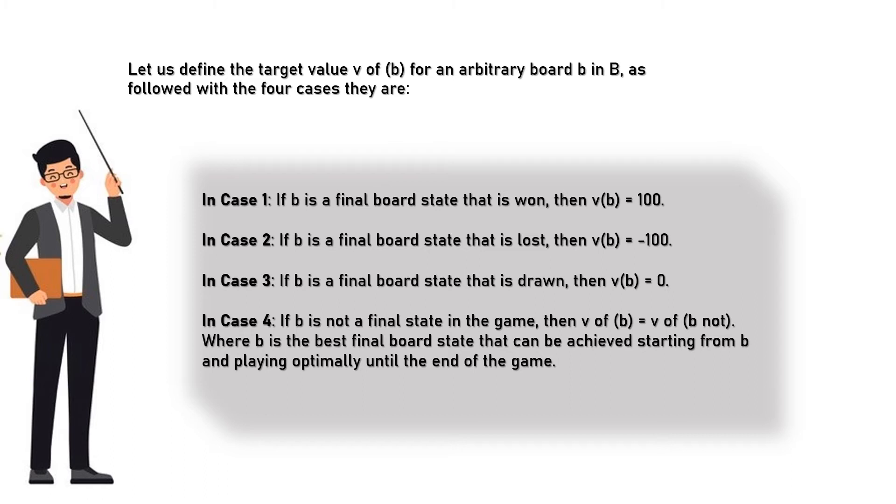In case three, if b is a final board state that is drawn, then V(b) equals zero. In case four, if b is not a final state in the game, then V(b) equals V(b'), where b' is the best final board state that can be achieved starting from b and playing optimally until the end of the game.